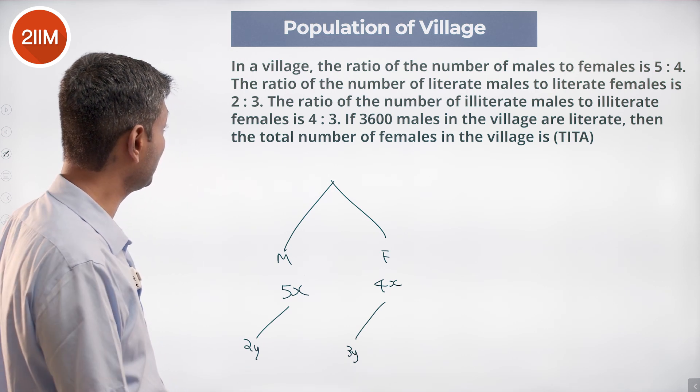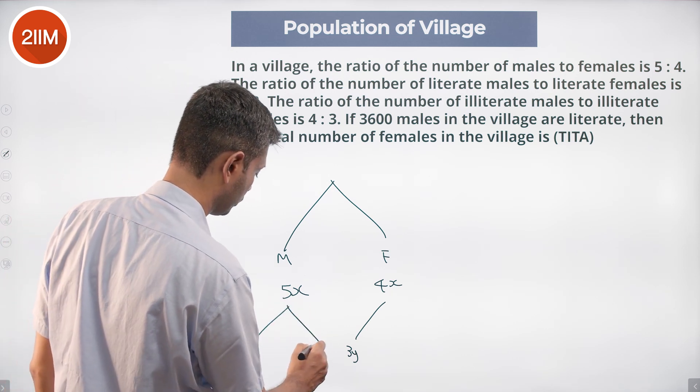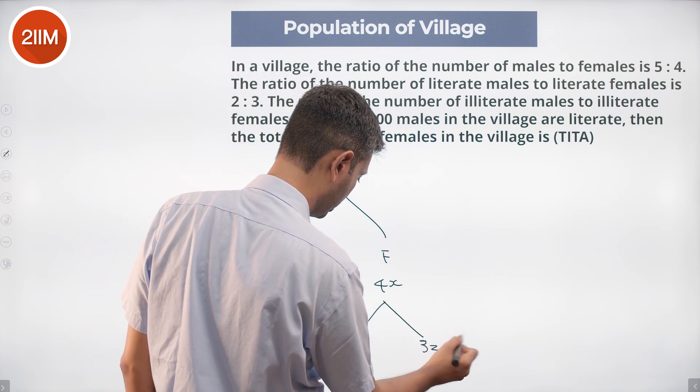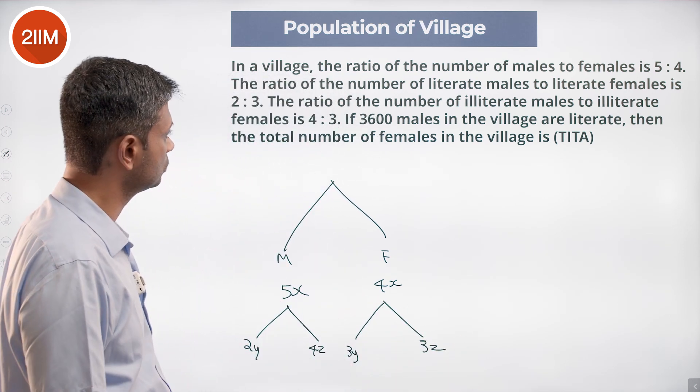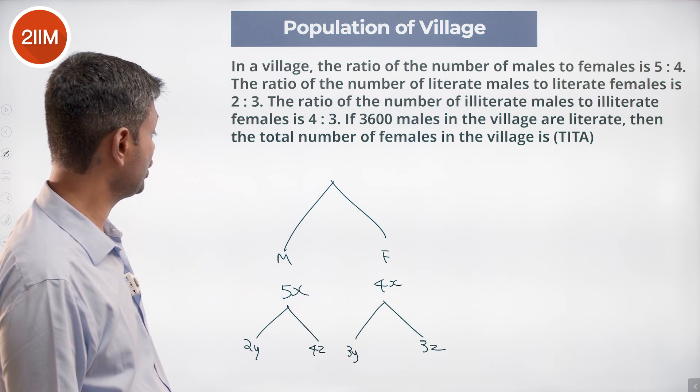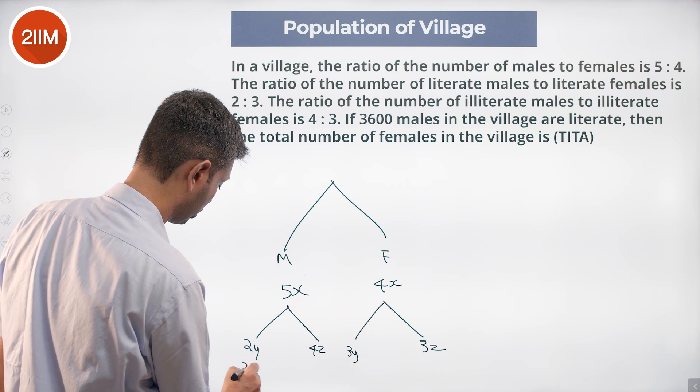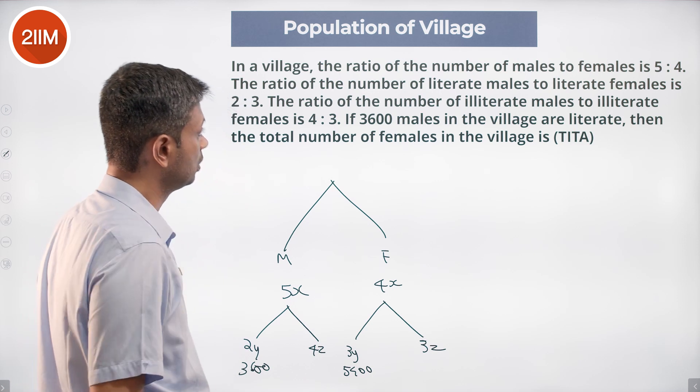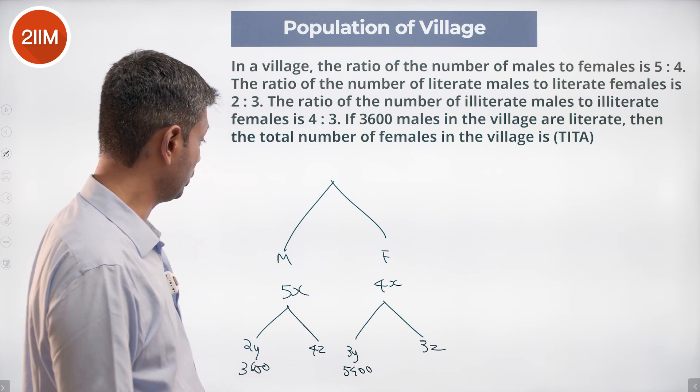The ratio of number of illiterate males to illiterate females is 4 to 3. If 3600 males in the village are literate, this means literate males is 3600, which means literate females is 5400. Then the total number of females in the village we need to find is 4x.